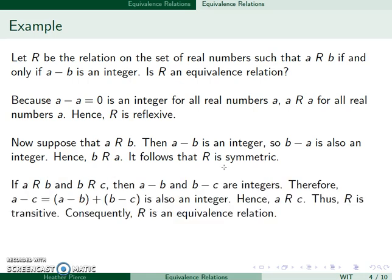Now suppose A is related to B and B is related to C. Then A minus B is an integer and B minus C is an integer. We can rewrite A minus C as (A minus B) plus (B minus C). Since both terms are integers and the sum of two integers is an integer, A minus C is an integer, so the relation is transitive. Therefore, this is also an equivalence relation.